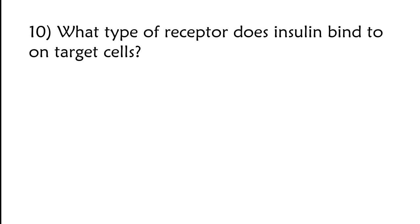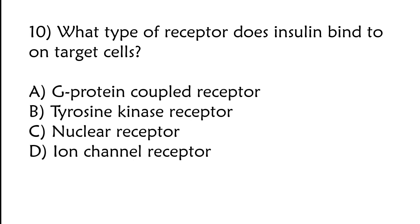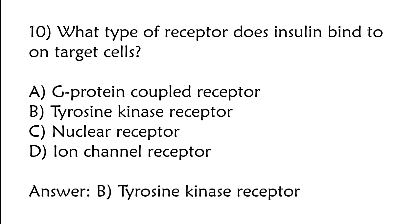What type of receptor does insulin bind to on target cells? A) G protein-coupled receptor, B) Tyrosine kinase receptor, C) Nuclear receptor, D) Ion channel receptor. The correct answer is option B: Tyrosine kinase receptor.